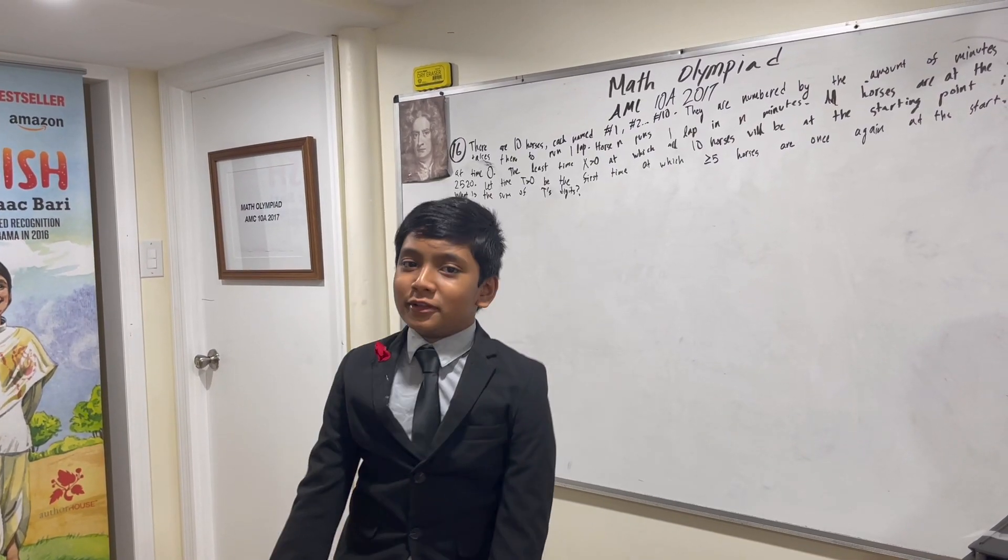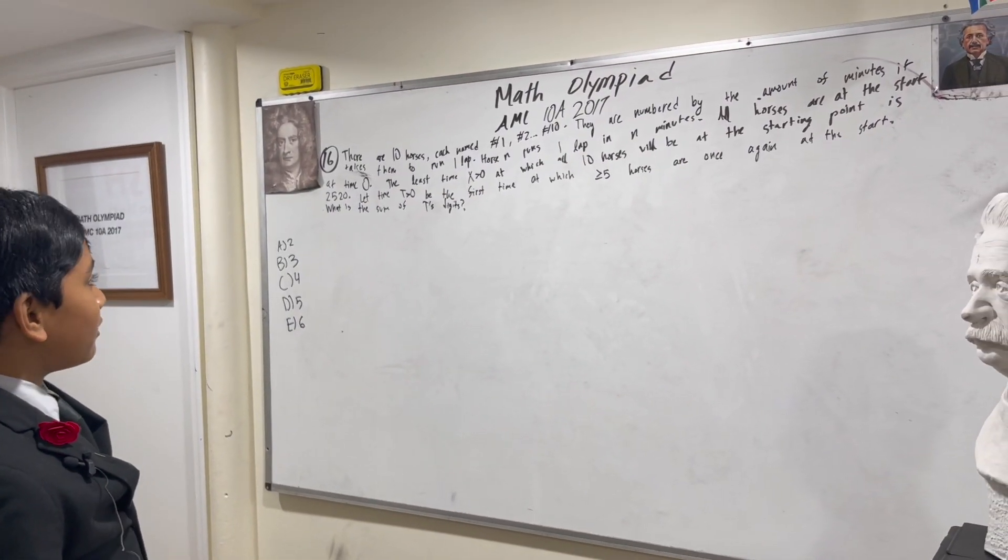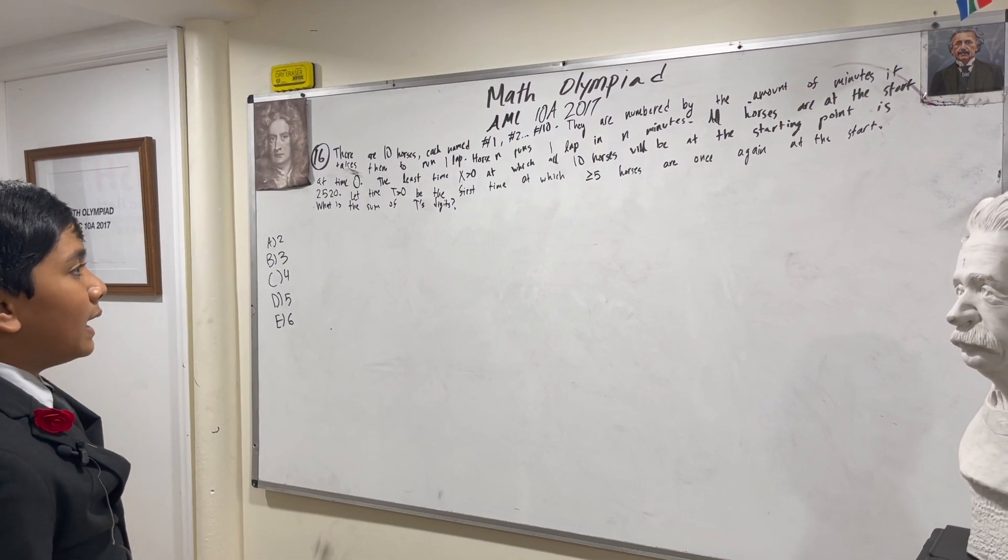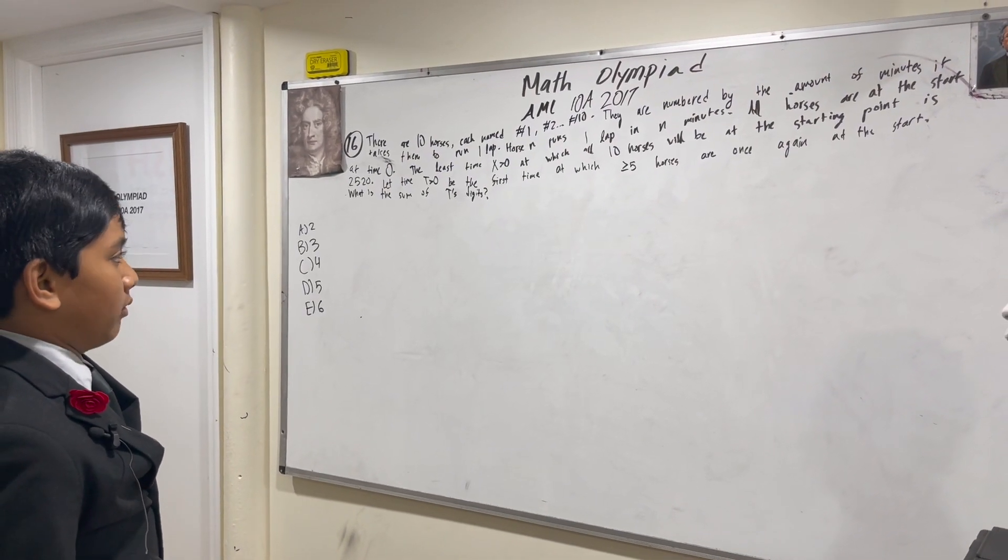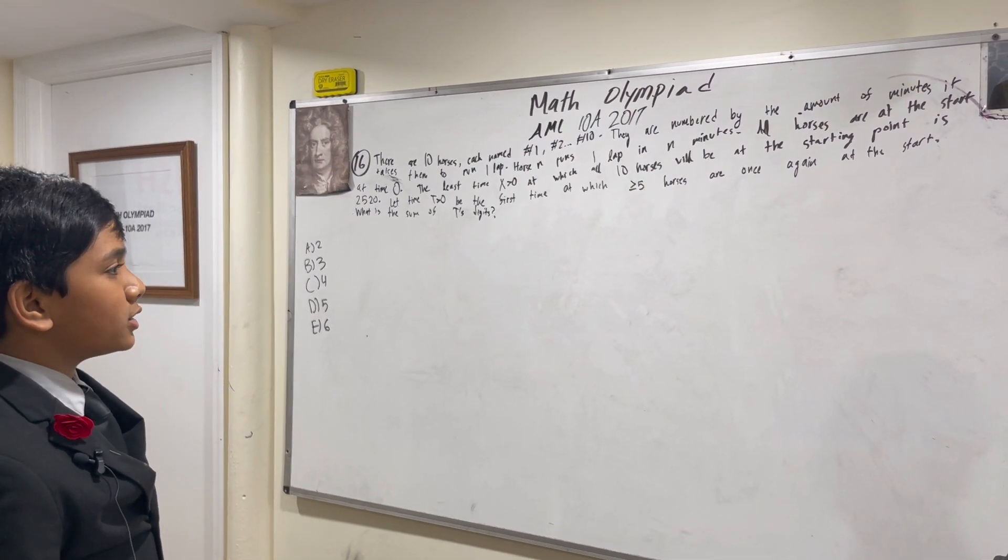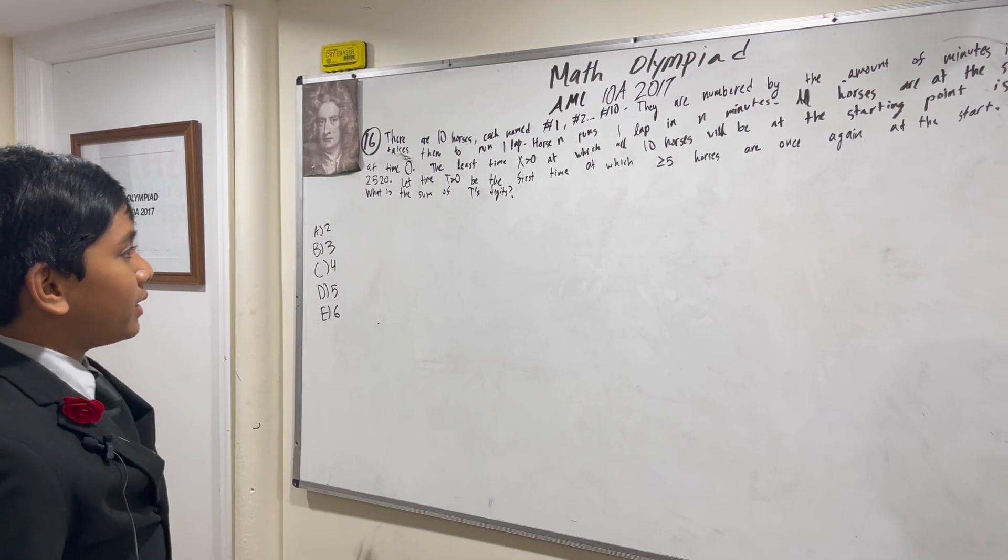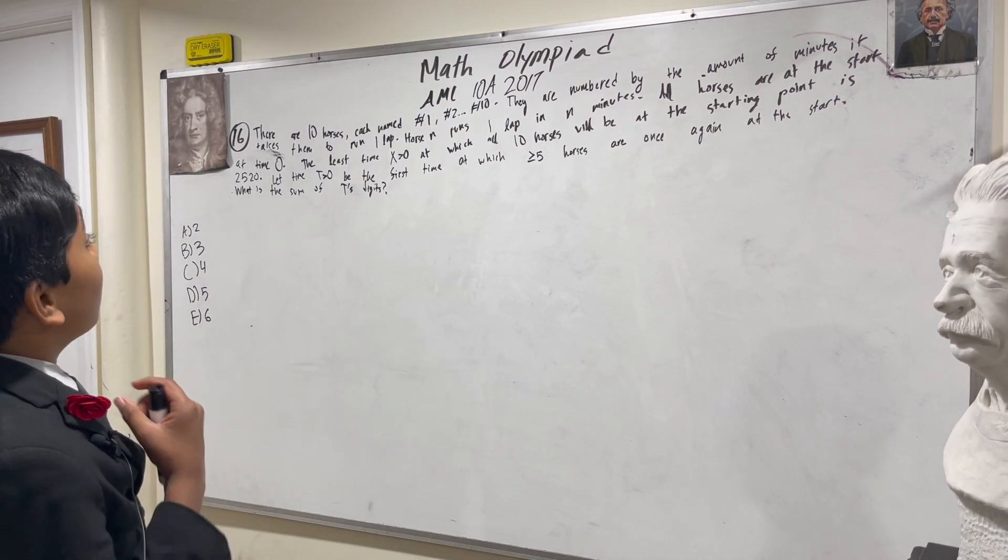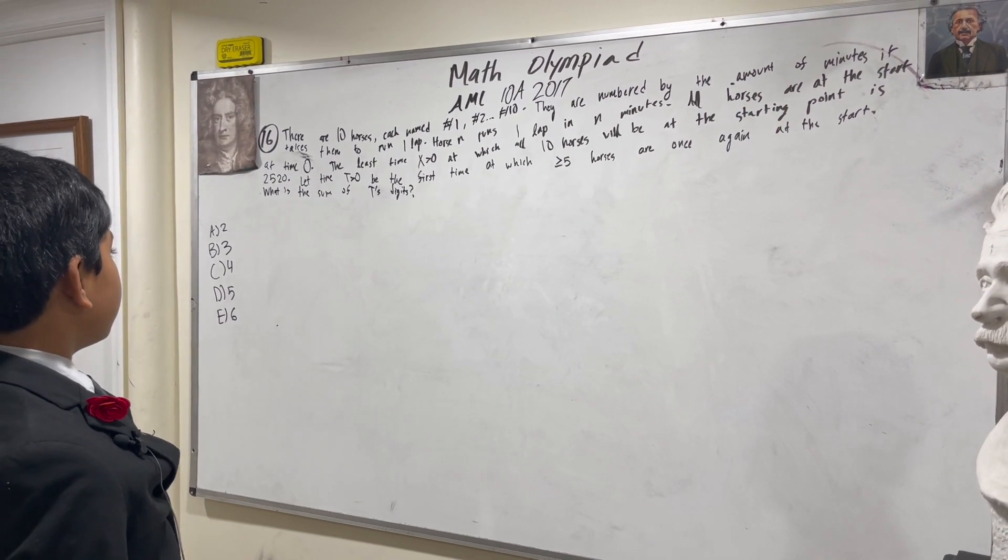Ten horses, each named number one, number two, number three, all the way to number ten. They are numbered by the amount of minutes it takes them to run one lap. Horse M runs one lap in N minutes. All horses are at the start at time zero. The least time X greater than zero in which all ten horses will be at the starting point is 2520. Let time T greater than zero be the first time at which at least five horses are once again at the start. What is the sum of T's digits?